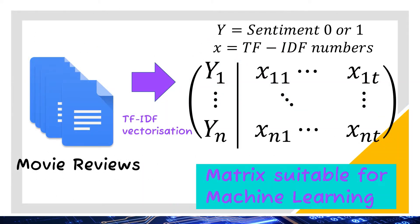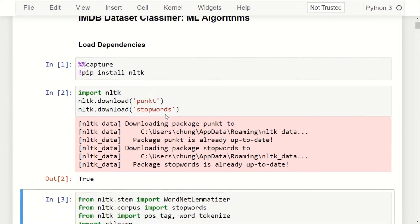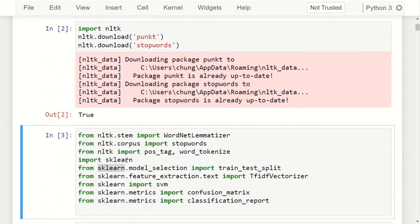Starting from each movie review, we compute the TF-IDF number for each word. Each review is converted into a vector point in high-dimensional space. Together, all these vector points and their corresponding sentiments form a matrix of numbers suitable for machine learning. Python has useful libraries for NLP — we use the NLTK library for pre-processing and the sklearn library for TF-IDF vectorization and running the machine learning algorithms.